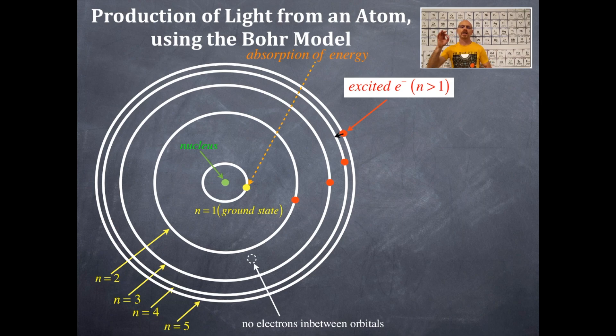And that n equals 5 electron has a variety of different options. It can fall from n equals 5 to n equals 4, n equals 5 to n equals 3, n equals 5 to n equals 2, n equals 5 to n equals 1. Those are all the possibilities. Remember, they cannot place the electron in between orbitals.